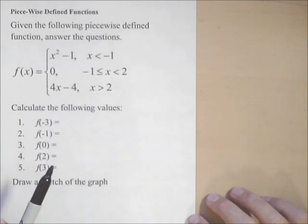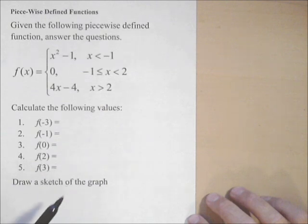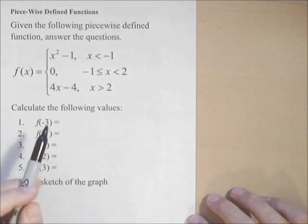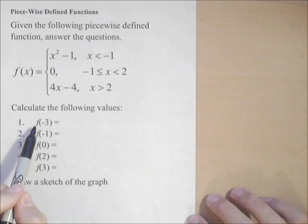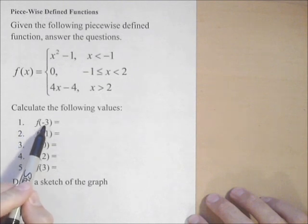First off, we're going to evaluate some function values, see how that looks, and then we're going to sketch the graph. We're asked to find f of negative three. First thing with a piecewise defined function, we've got to figure out which piece we're using if x is negative three.